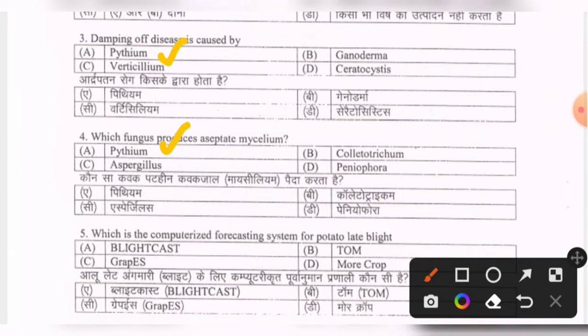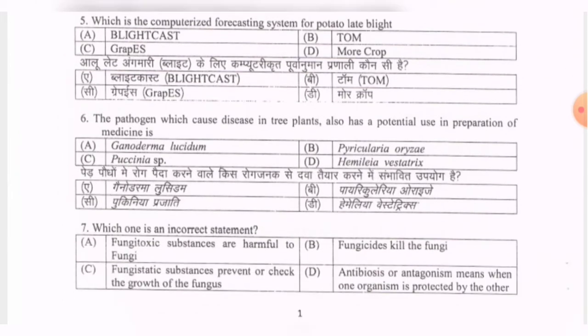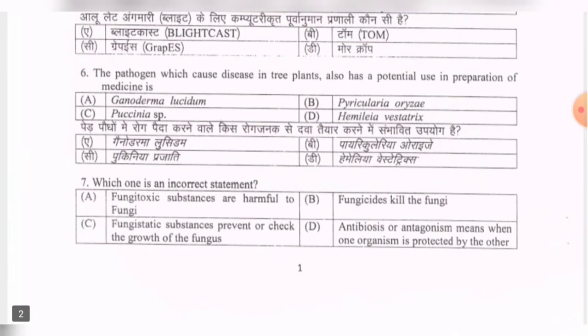Next question: which of the computerized forecasting systems is used for potato late blight? Options are Blightcast, Tom-Cast, PS More, Crop. The correct option is the first one — Blightcast.